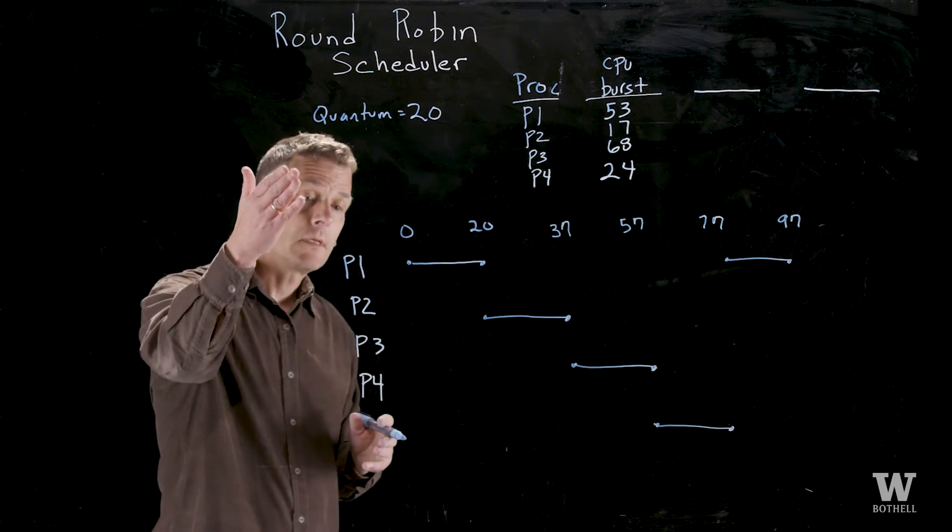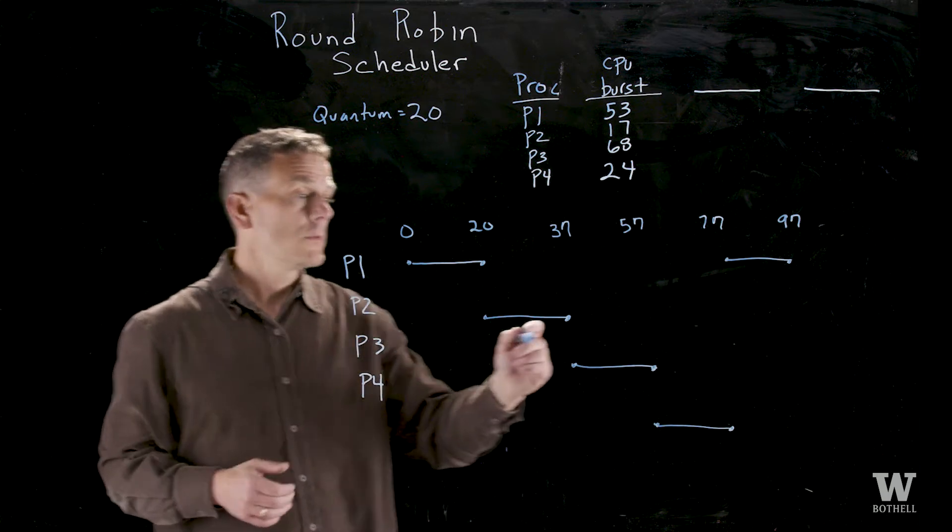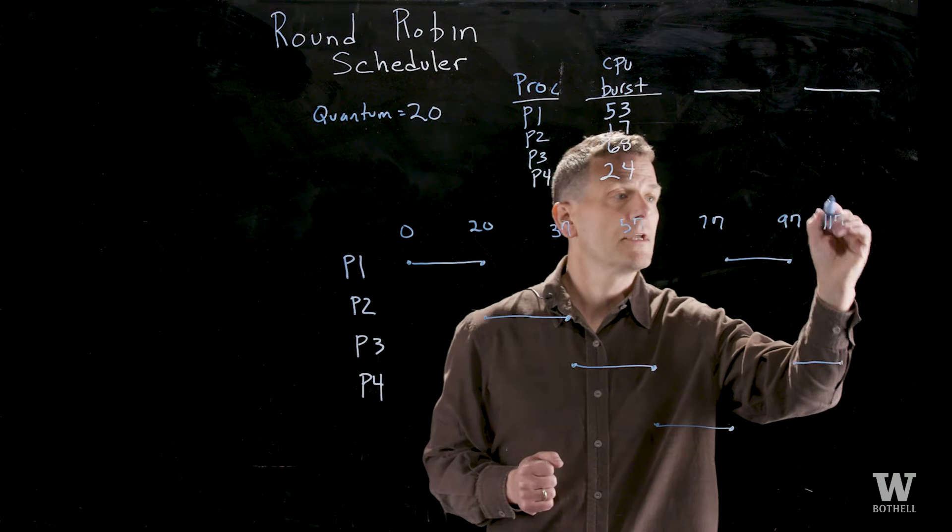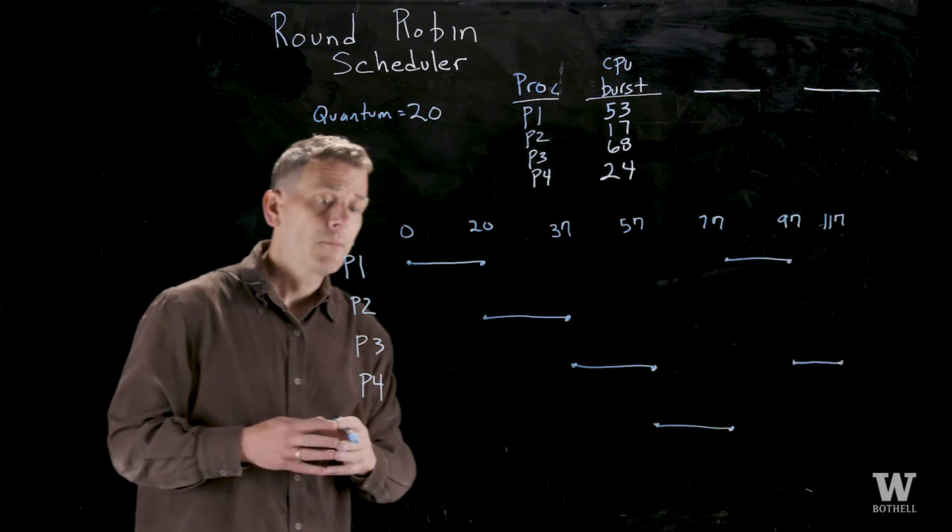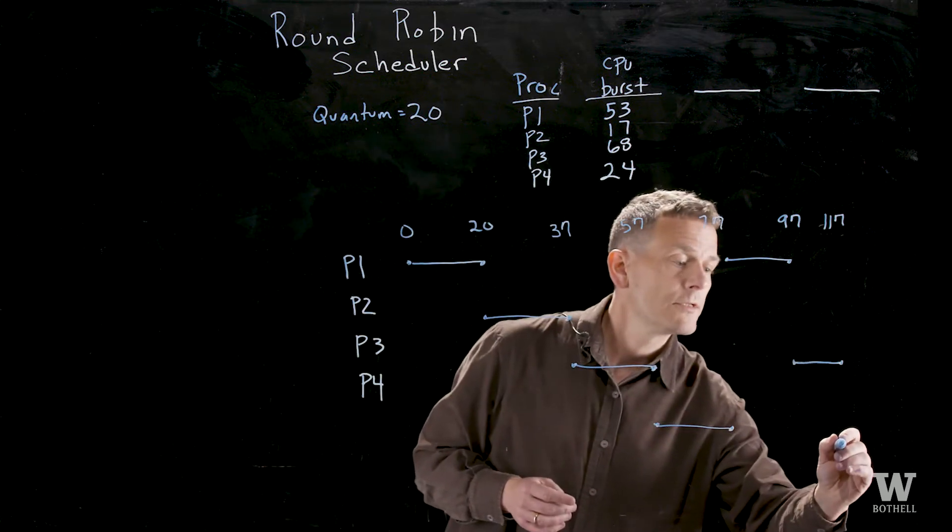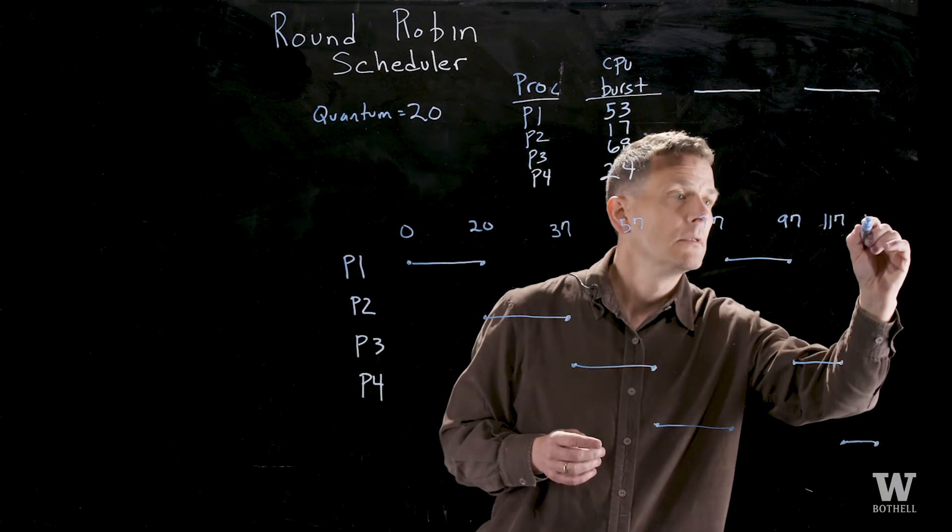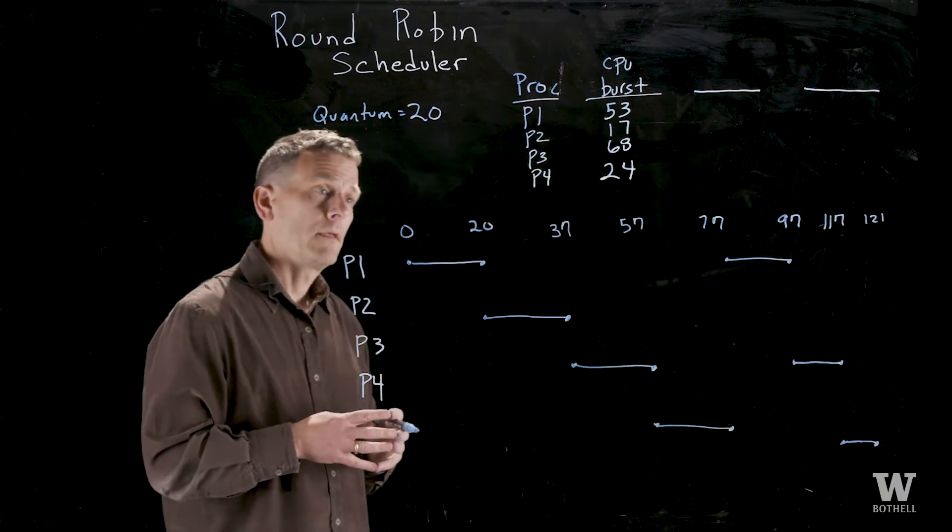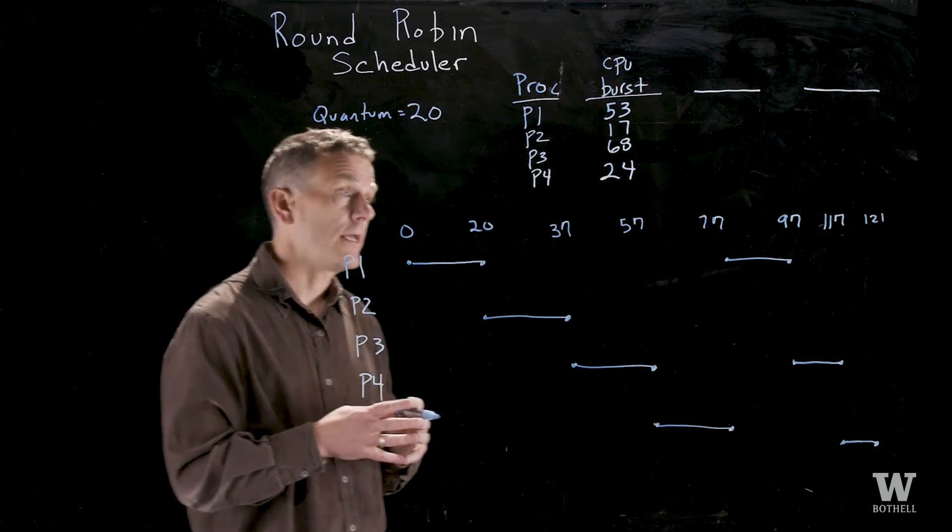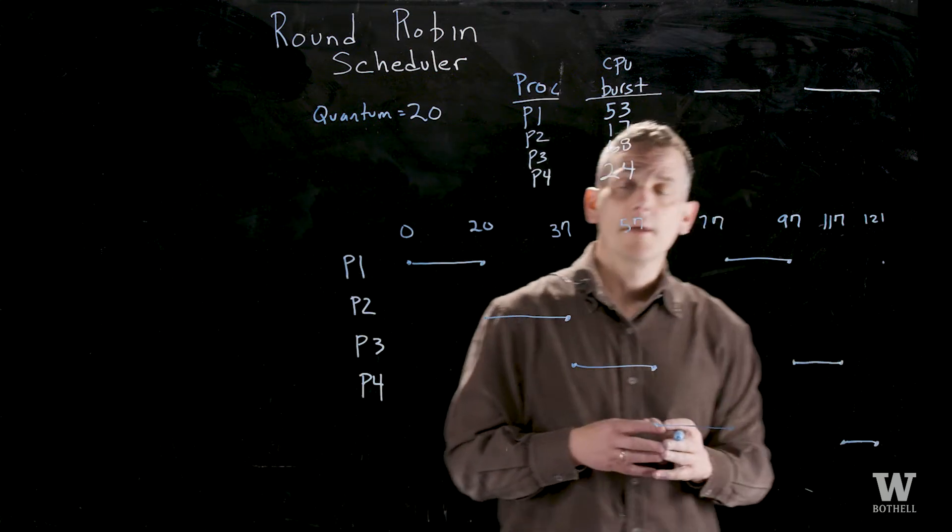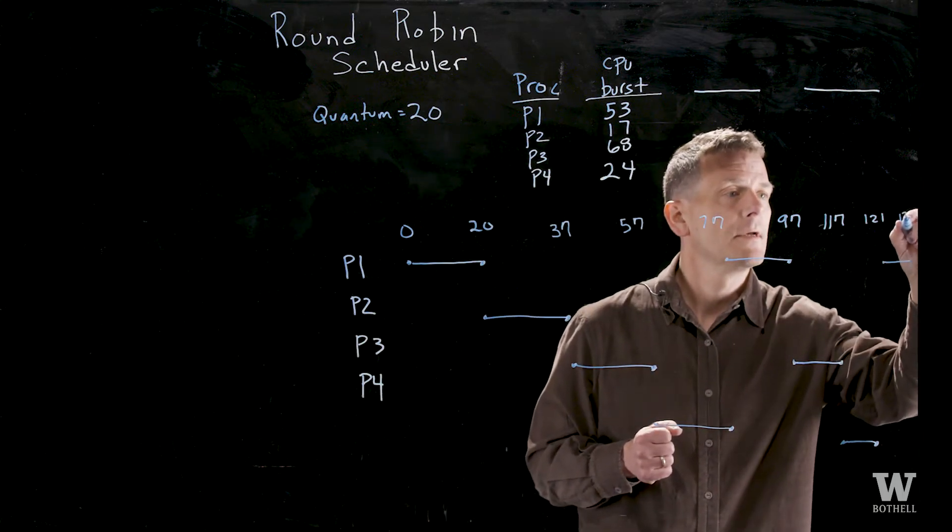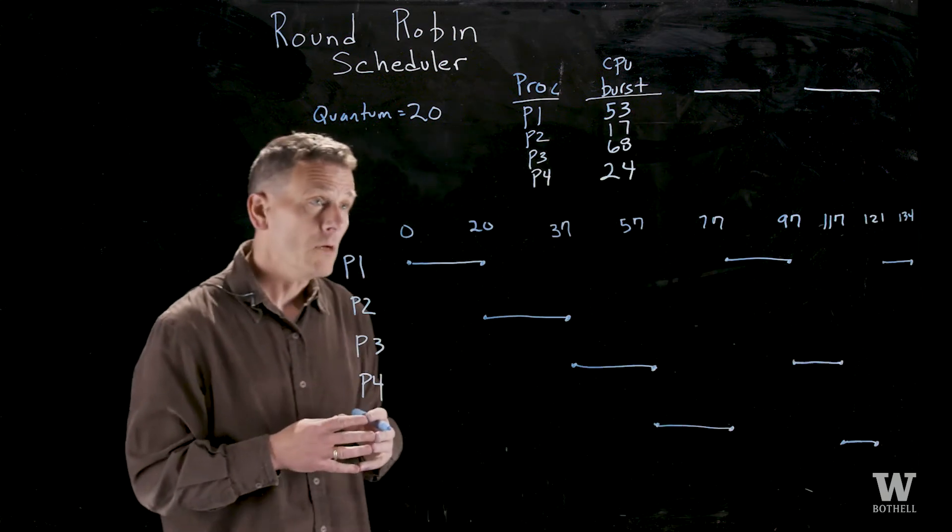Process 1 has still 33 milliseconds to run so it will use the full 20 millisecond quantum to 97. Process 2 is done. Process 3 goes next, it took 20 so it'll go again to 117. Process 4 now runs, it's used 20 so it only requires 4 milliseconds, so it will run from 117 to 121. Back to process 1, it still has 13 milliseconds left. Now luckily on a computer we don't run out of space. Here we're getting a little tight for space but we'll make it fit. This will go to 134 and it will be done.